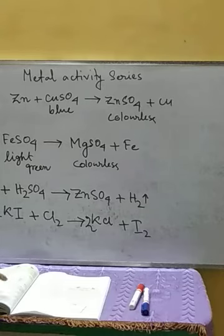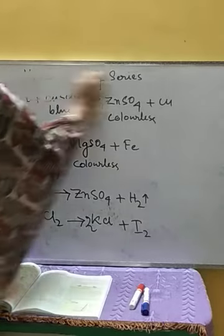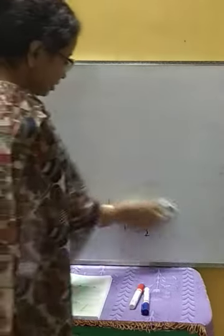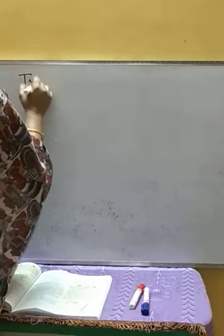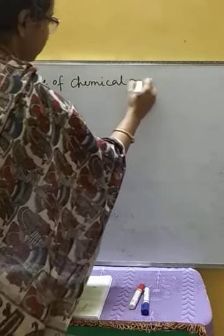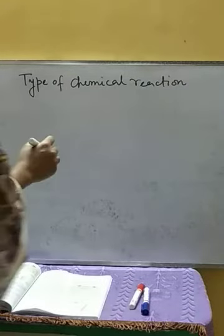Now we are going to classify reactions according to the energy released into two groups: one is exothermic reaction and another is endothermic reaction. So, type of chemical reactions with respect to the energy released.